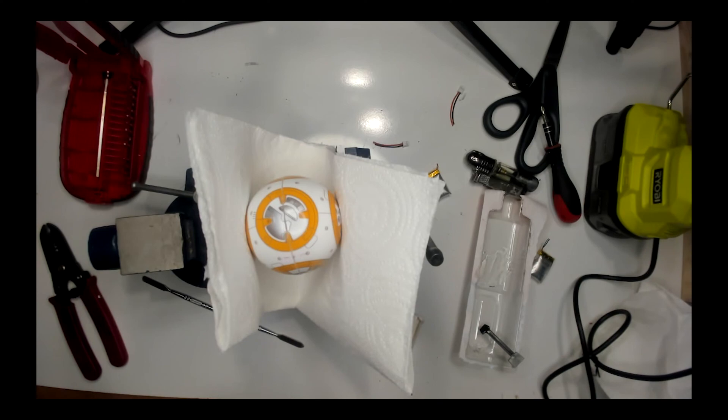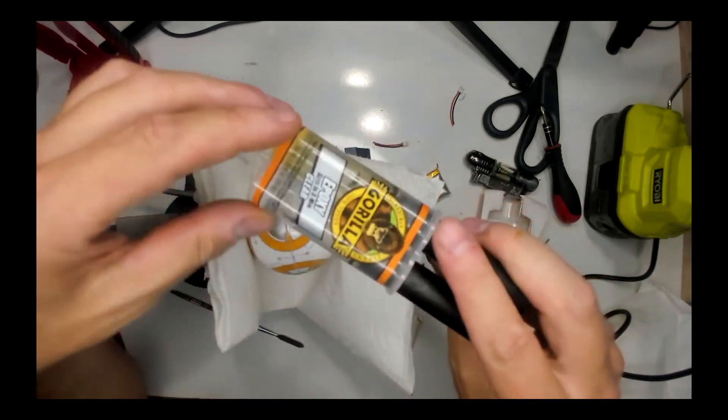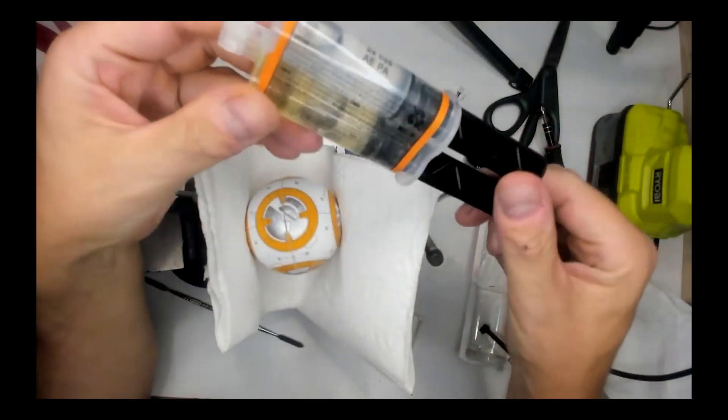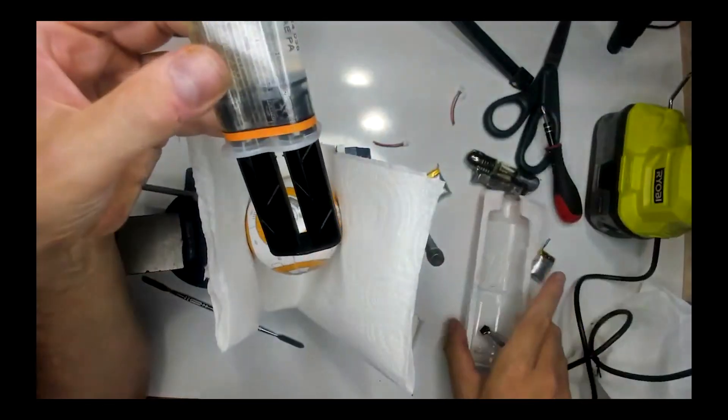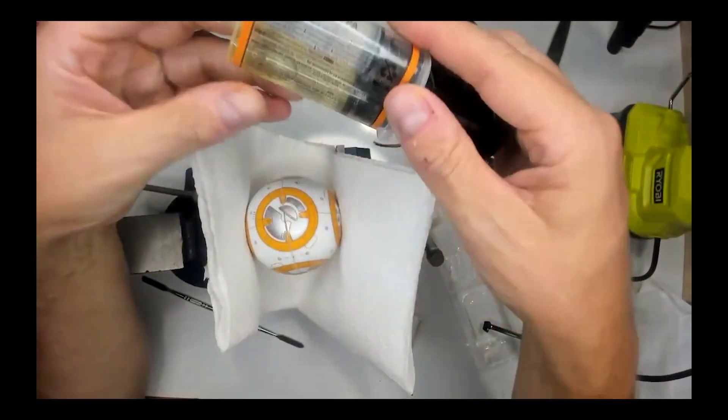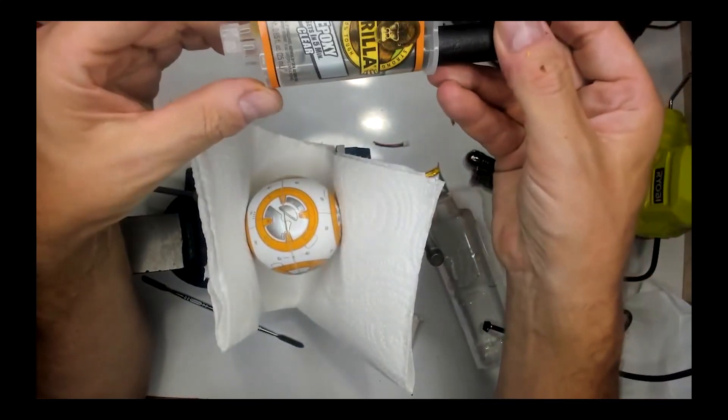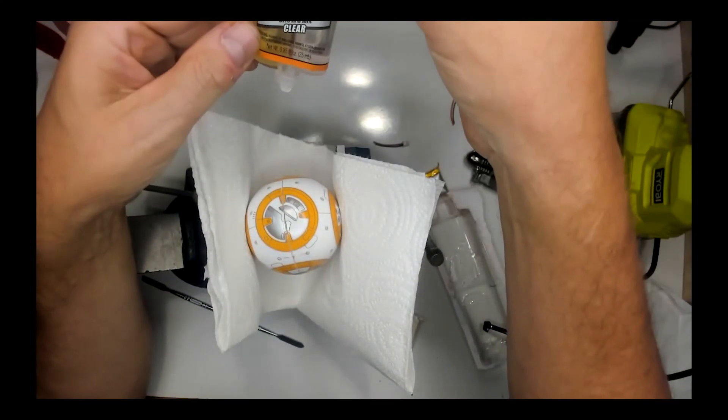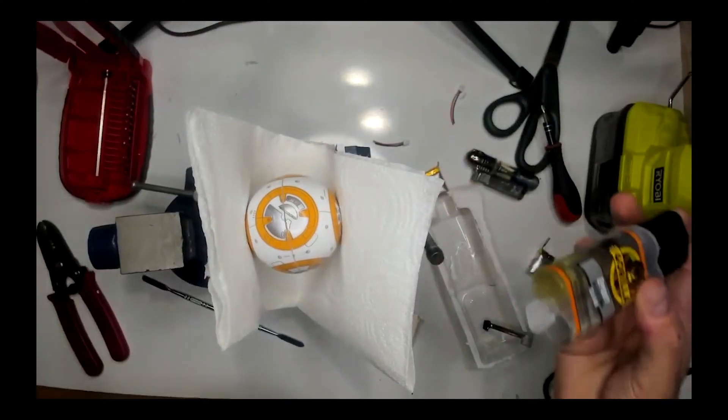I got so excited that I got the epoxy that I glued it and forgot to hit record. So these are the two chambers. Mixed it in here and then applied to the droid. It's supposed to set in five minutes. It's been 15 so I'm going to test it and take it out of the vise here now and hopefully nothing falls apart.